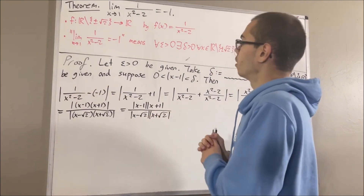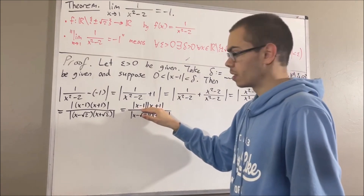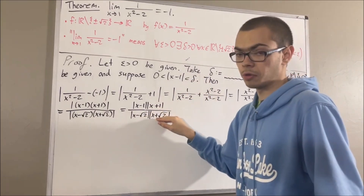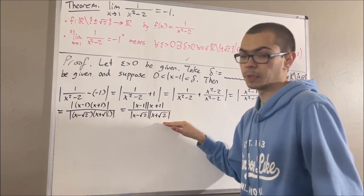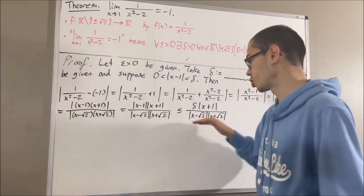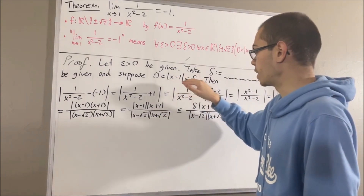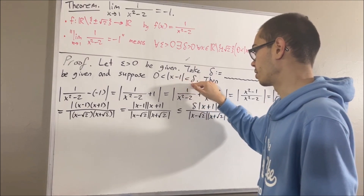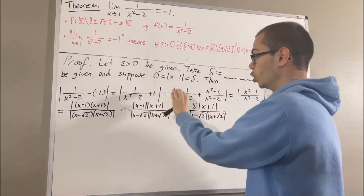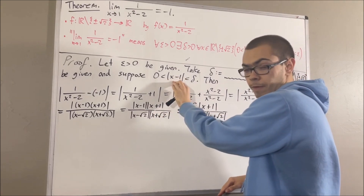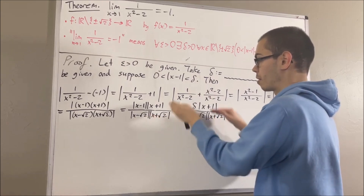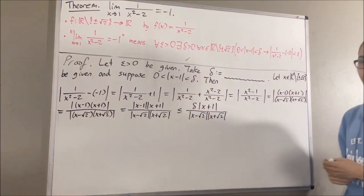We've re-expressed this in a different way. Notice we have absolute value of x minus 1, and we know that absolute value of x minus 1 is less than delta. Since all these factors are greater than or equal to 0, this expression must be less than or equal to delta times absolute value of x plus 1, divided by the absolute value of the denominator factors. You can show this by multiplying both sides of the inequality by absolute value of x plus 1 and then dividing by the denominator.